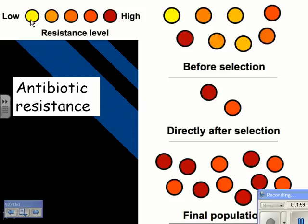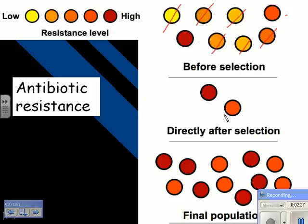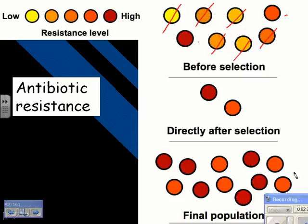In this diagram, low resistance is yellow and high resistance is red. You have a bacterial population, and the doctor gives you antibiotics for 10 days. The drug kills off all the ones that are not highly resistant. Let's say you feel better in a couple of days and you stop taking it. What happens is that the few resistant bacteria that are left reproduce, making more and more of themselves — all resistant. So if you go back on the antibiotic, it's going to be harder to kill them. That's why when you're given antibiotics, you should finish the whole prescription.